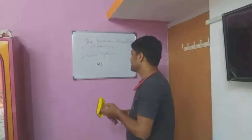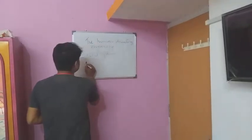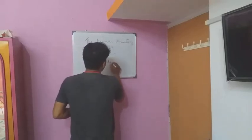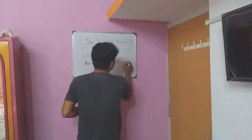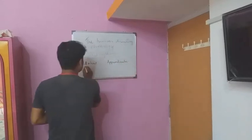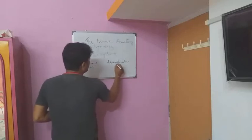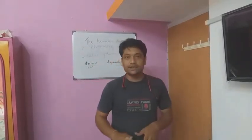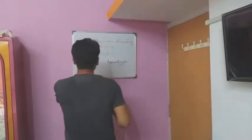The skeleton system is divided into two parts: one is axial and the other is appendicular. The axial skeleton has 80 bones and the appendicular skeleton has 126 bones. I will first discuss the axial bones.